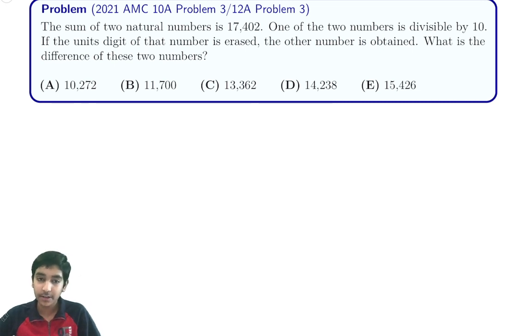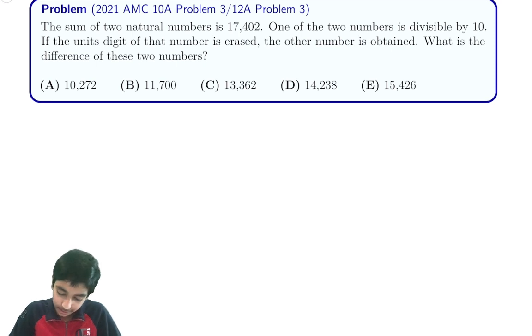There's also the 12A problem three which is actually kind of surprising because generally MAA doesn't put two problems in two different contests at the same number. The AMC 12 is supposed to be harder so they generally put problems in the AMC 12 earlier than the ones in the AMC 10, but in this case they put the same which is strange. But anyways let's take a look at the problem.